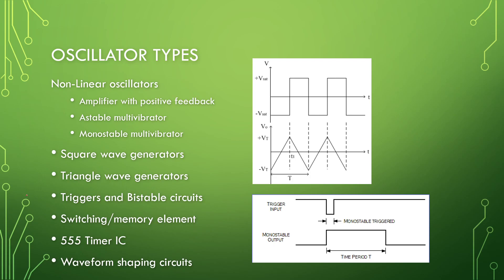Then we get some non-linear oscillators which is typically an amplifier of some positive feedback. In that criteria we have astable and monostable multivibrator. And these non-linear oscillators are typically used for square wave generation, triangle generation. And we build this using triggers and bistable circuits, which is typically a switching or memory element of some kind. So if you combine memory element and trigger, we get the triple 5 timer IC. So we will also be looking at how to use the trip 5 IC or understanding the internal workings of a trip 5.